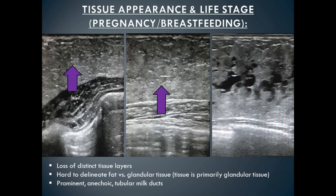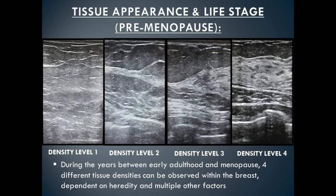The most characteristic feature during pregnancy and breastfeeding is the loss of distinct tissue layers. Although the tissue appears grayish in color, it's actually all a thick layer of glandular tissue. As breastfeeding occurs, you start to see anechoic tubular structures, which are the milk ducts within the tissue. You can no longer define glandular tissue versus fat.